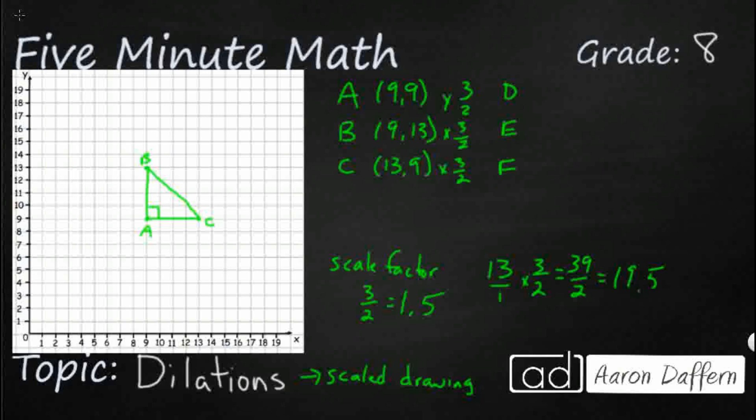And then let's go ahead and do our 9 by 3 halves. So that's going to be 27 over 2, so that's going to be 13.5.